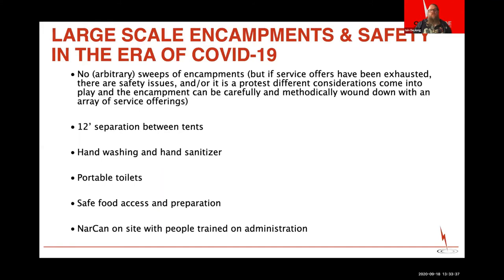If the encampment is seemingly safe, ask: is there adequate separation between tents? Some outreach workers have had to help reconfigure larger encampments to allow adequate separation and decrease exposure risk. Large-scale encampments can benefit from hand washing and hand sanitizer stations, portable toilets, and safe food access and preparation. And given that we're also dealing with an overdose crisis, making sure there's Narcan on site with people trained on its administration — including trained peers — is essential.